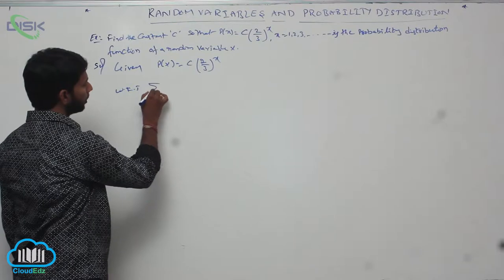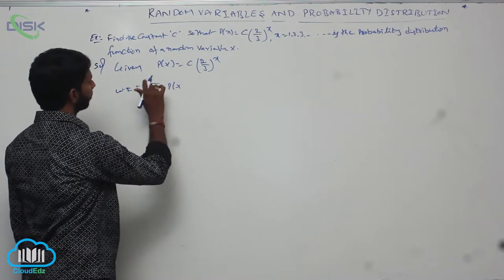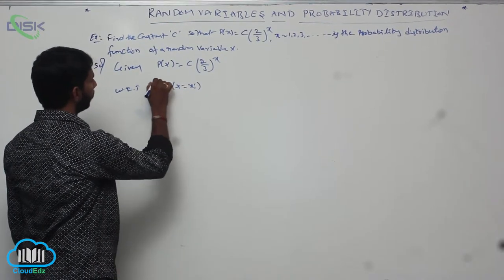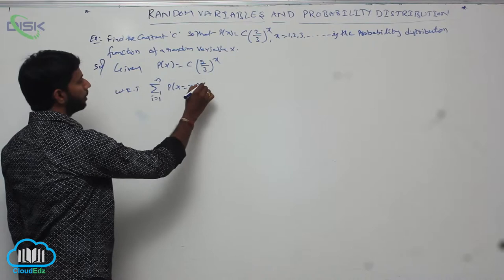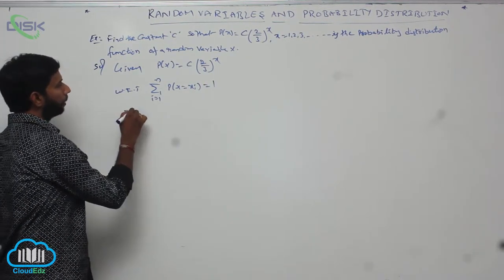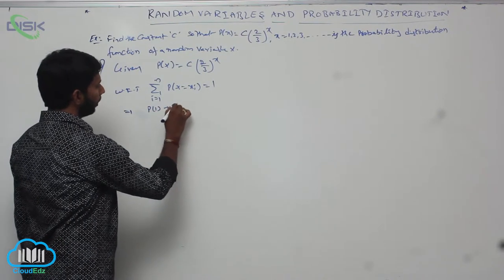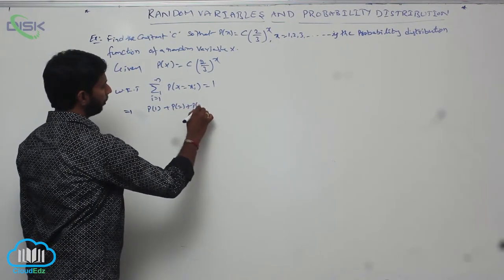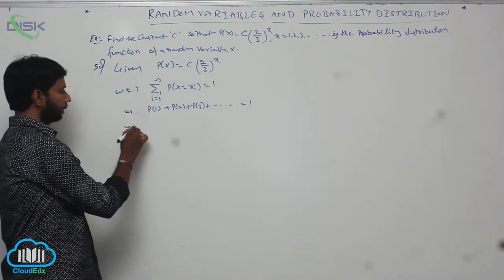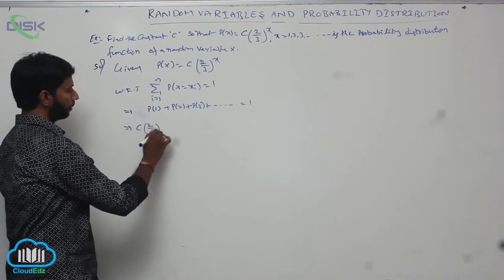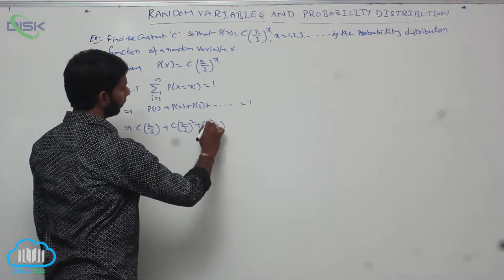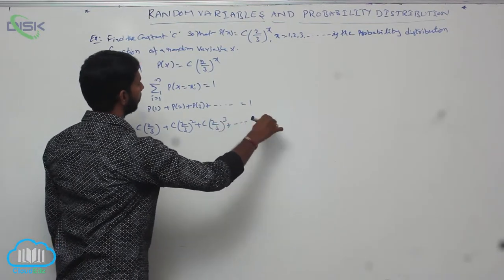We know that the sum of probabilities is equal to 1, that is sigma of P(X) for X from 1 to N equals 1. This implies P(1) plus P(2) plus P(3) plus and so on equals 1. Substituting the values: C times (2/3) plus C times (2/3)^2 plus C times (2/3)^3 plus and so on equals 1.